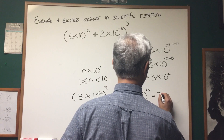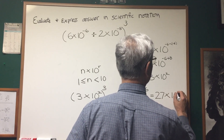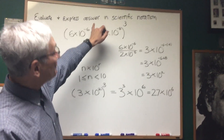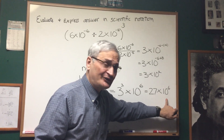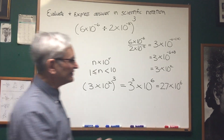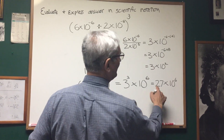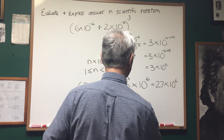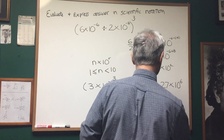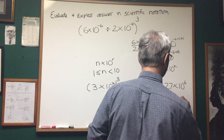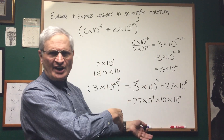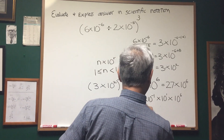So we write 27 times 10 to the sixth. But if the question asks for proper scientific notation, we're not finished — 27 is not strictly less than 10. So we take that 27, divide it by 10, and multiply by 10 to compensate, inserting a factor of 10 to the negative 1 times 10 to the 1.